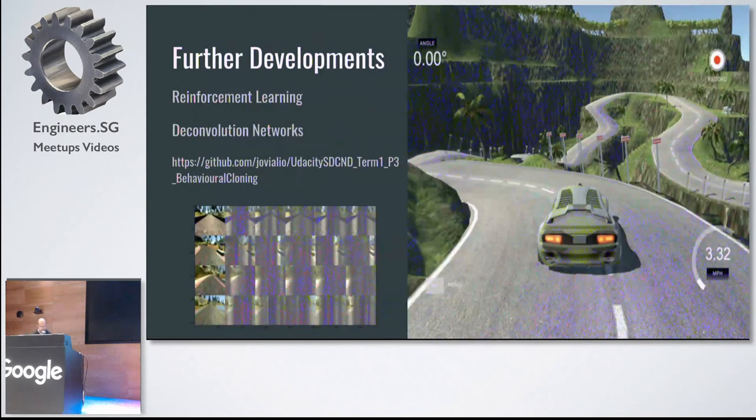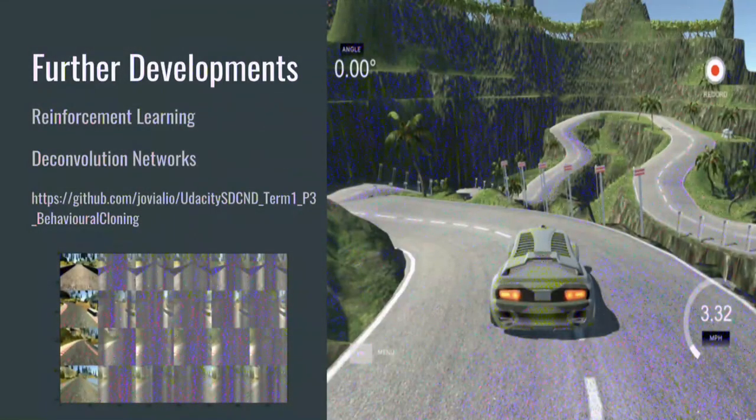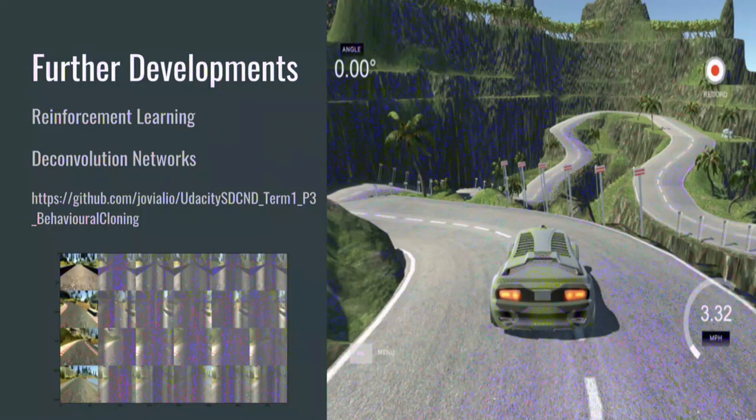So, further developments, reinforcement learning that Sam actually previously suggested, but I have not looked at it. Of course, as I mentioned, Deconvolution Network. Over here is a very small picture, courtesy of my friend, Malik. He gives some ideas, it's not the actual Deconvolution, but basically I just picked out the layers with the highest activations, and I just kind of overlay it.